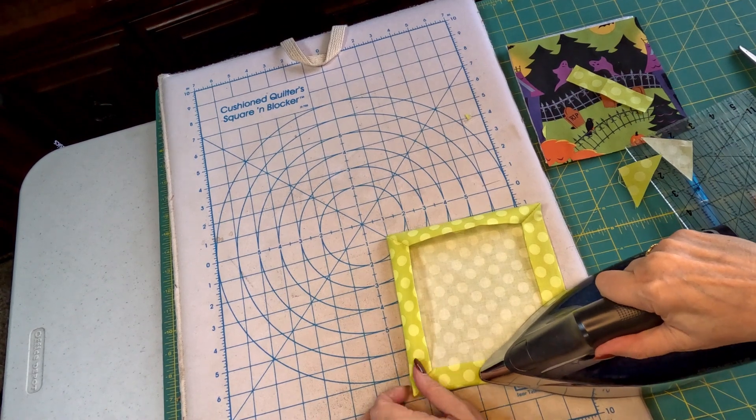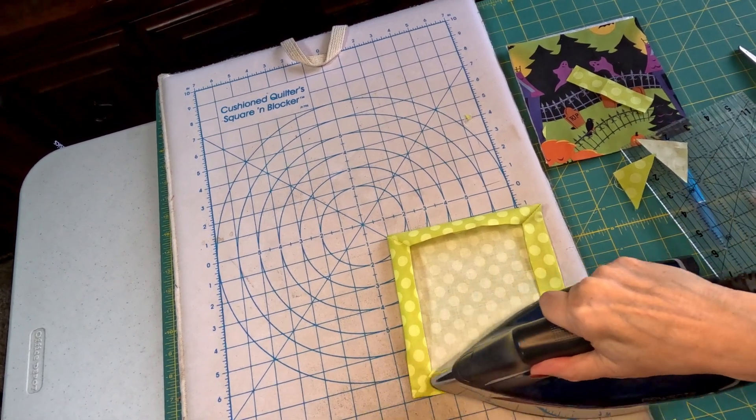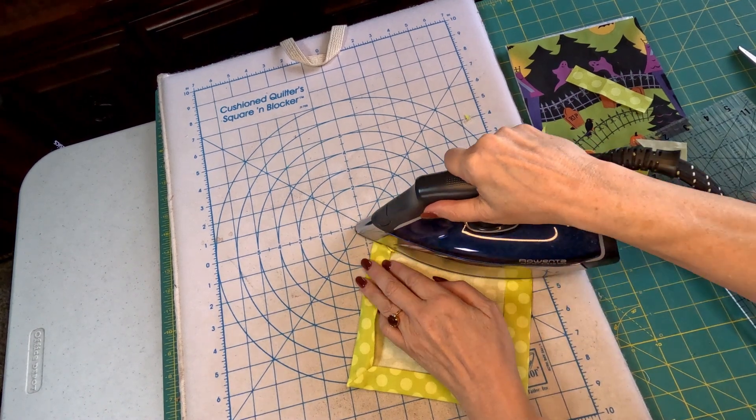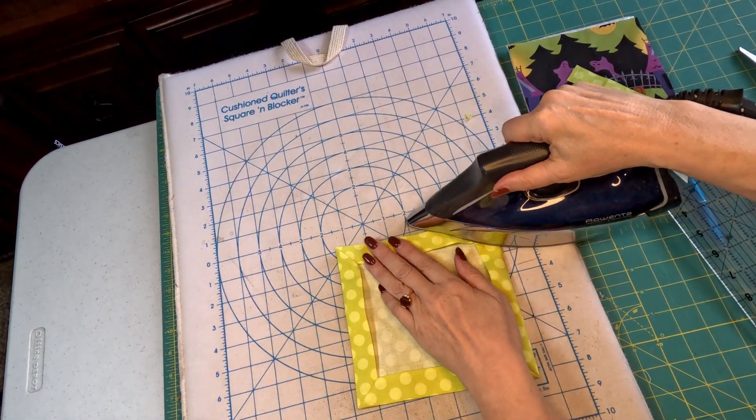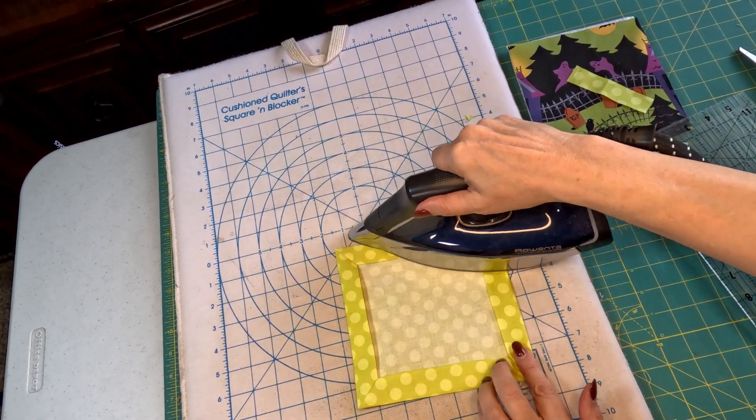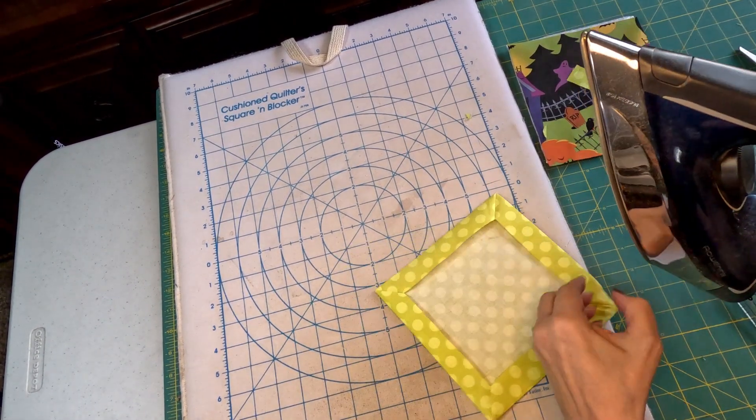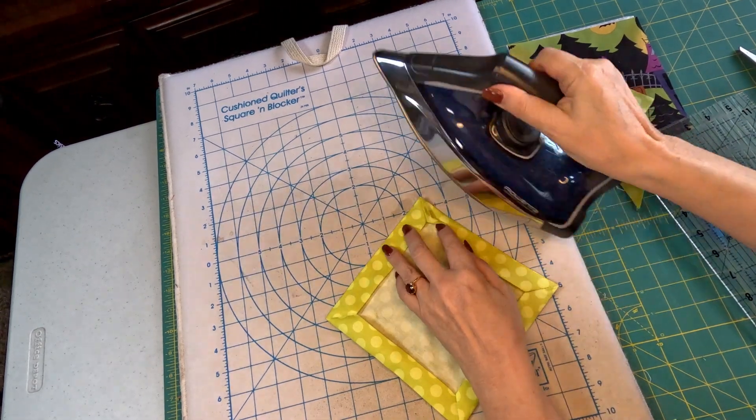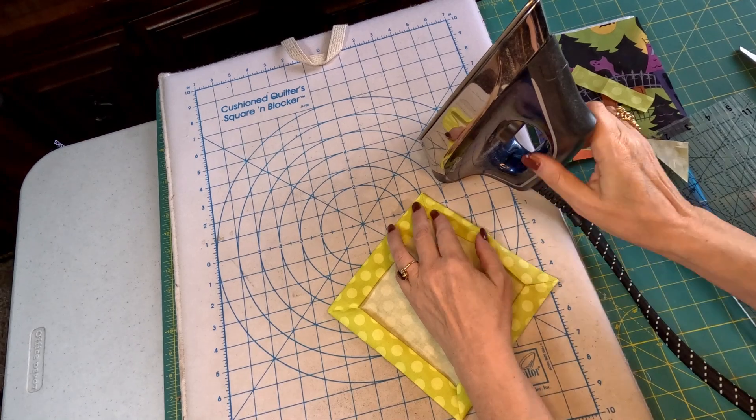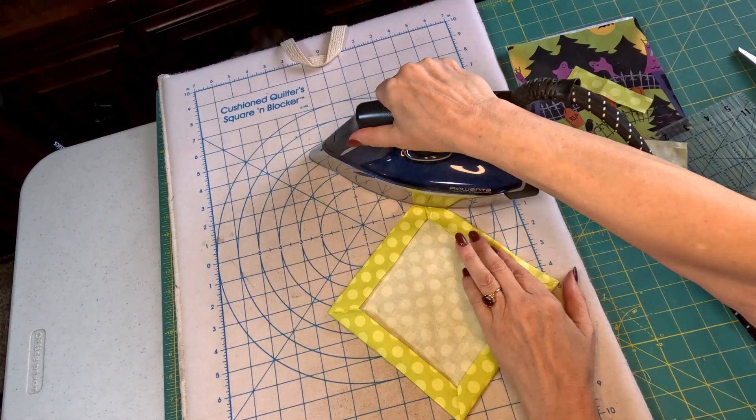Then I'm gonna iron this in place. And you should have about a one inch border all the way around.